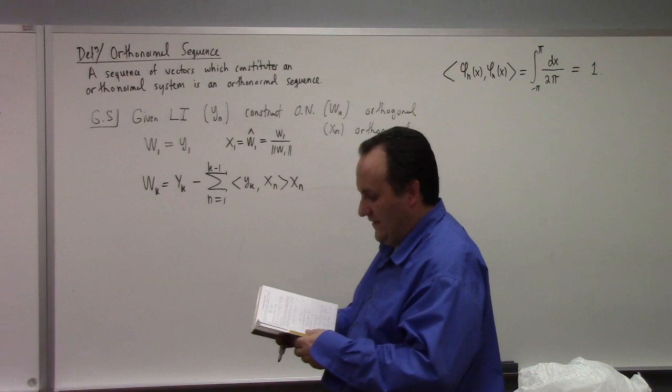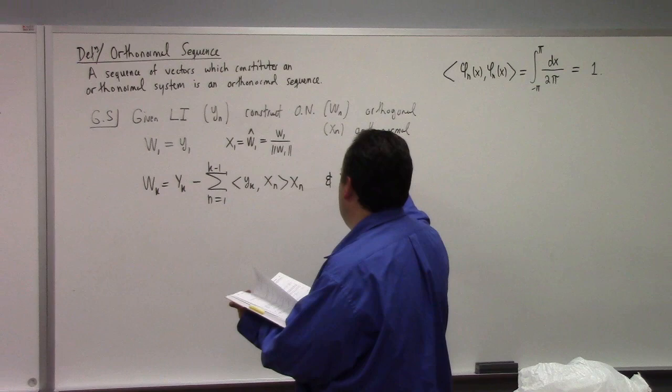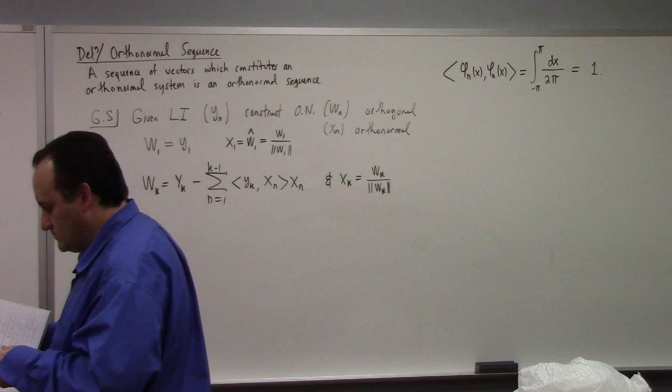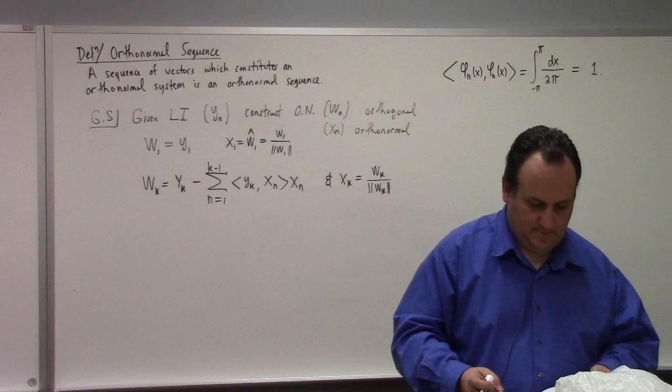So that's that orthogonal projection that I was talking about. And then X_K is, well, what is it? It's the, it's W_K divided by the length of W_K. And he proves by induction that this gives you an orthogonal sequence. Which is pretty neat. Right?